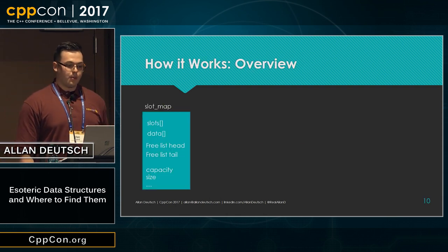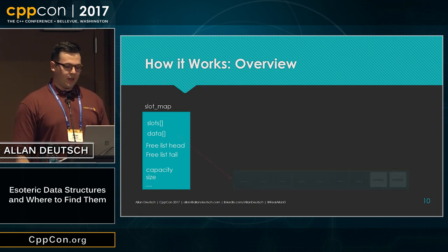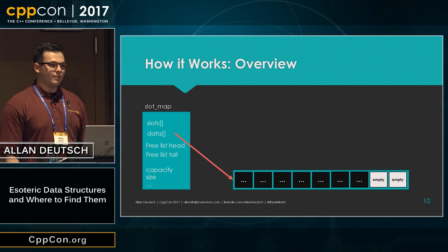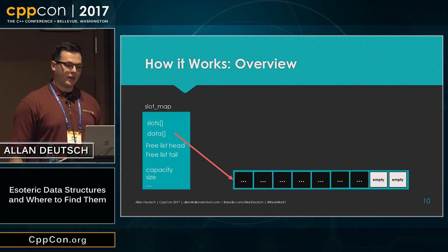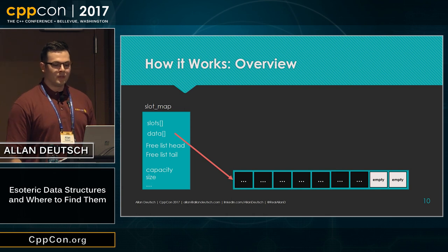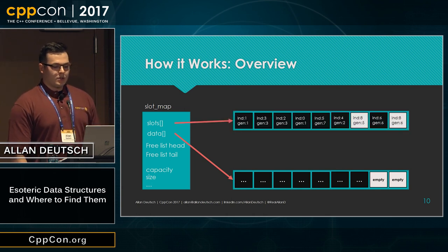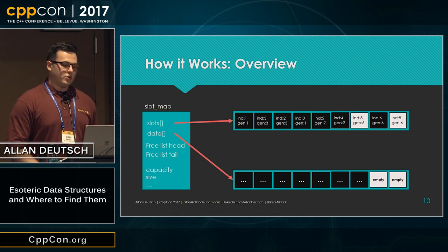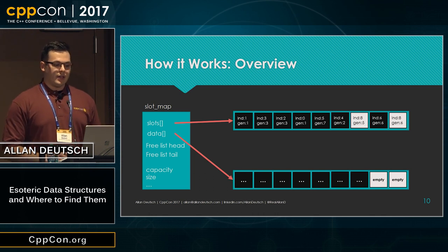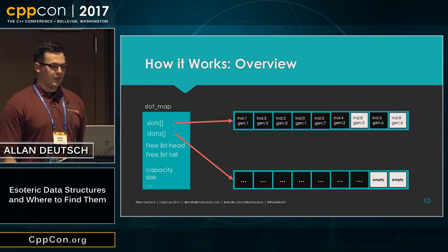The way a slot map works is you have an array of data — you're going to keep all of your elements stored there, packed towards the front in contiguous memory. Where the real magic happens is in a slots array. It'll have two values in each slot: one is an index that goes into the data array, and the other is a generation counter — that's how we solve the ABA problem. All of these indices correspond to some data that's being stored.